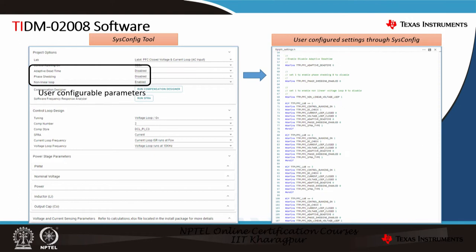Going into the sysconfig tool in more detail: the left side view shows when you open it. Highlighted aspects include adaptive dead time, phase shedding, and non-linear loop mode, where the options are to enable or disable. For example, if you start with adaptive dead time currently disabled, correspondingly on the right-hand side you can clearly see a macro defined as TTPL PFC underscore adaptive underscore dead time.